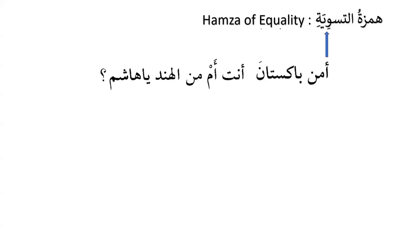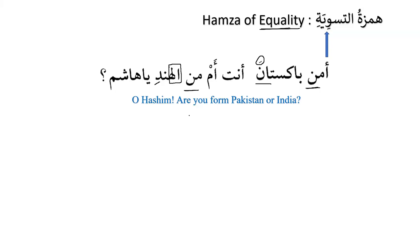The teacher asks: 'A-min Pakistana anta am minal Hindi ya Hashimu?' — Are you from Pakistan or India? The hamzah here is called hamzat at-taswiyya — the hamzah of equality — because whatever comes after hamzah must also come after 'am'. Pakistan is mamnu min as-sarf so it does not take kasra. Al-Hind should also be mamnu min as-sarf, but when 'al' is added the noun accepts kasra — this 'al' is al-za'idah, extra 'al' that Arabs sometimes use with names of persons and countries.